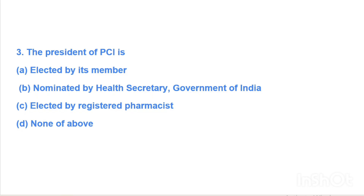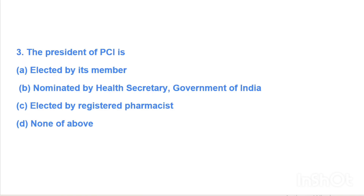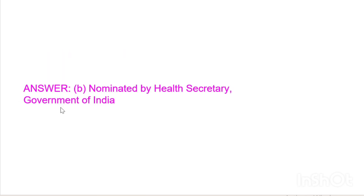Next question: The President of PCI is — Option A: elected by its members, Option B: nominated by Health Secretary, Government of India, Option C: elected by registered pharmacists, Option D: none of the above. Answer is Option B, nominated by Health Secretary, Government of India.